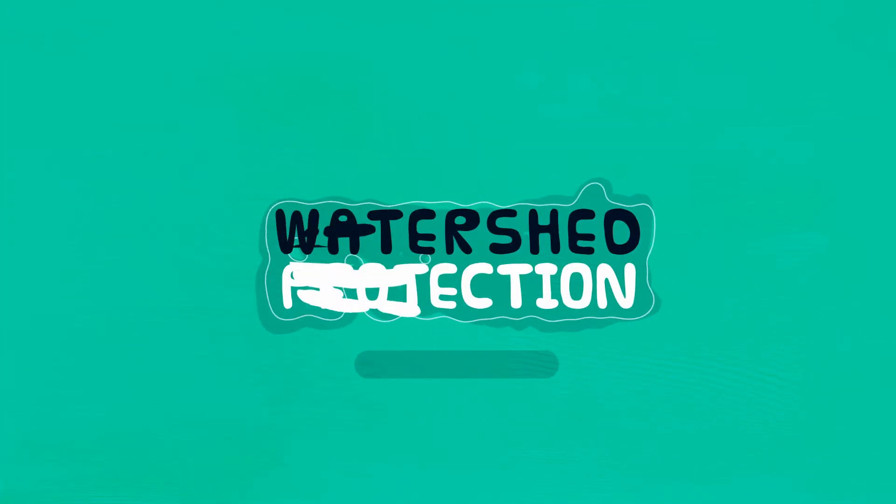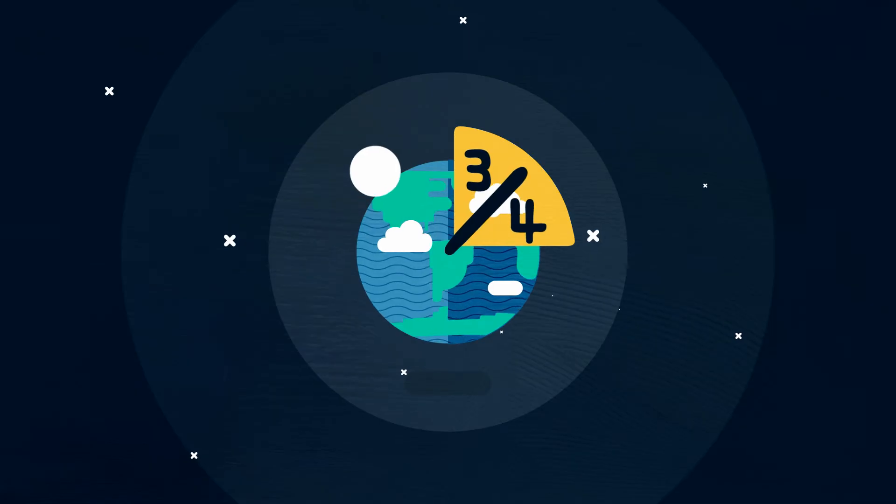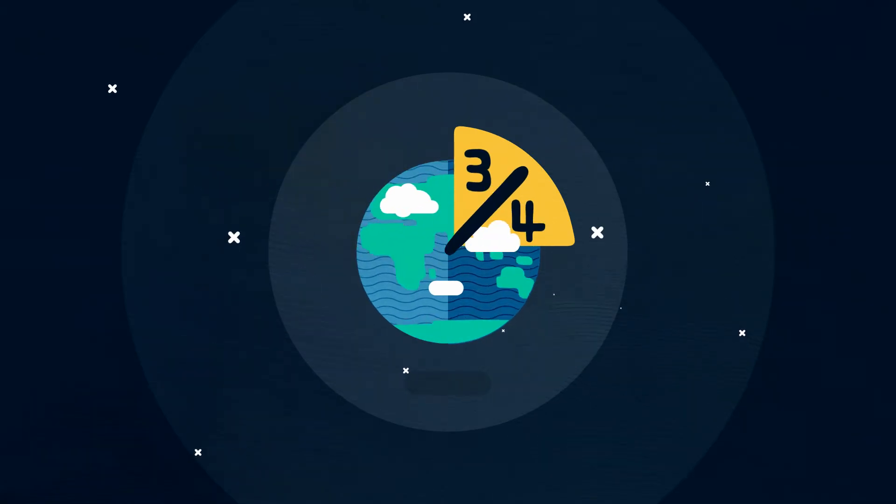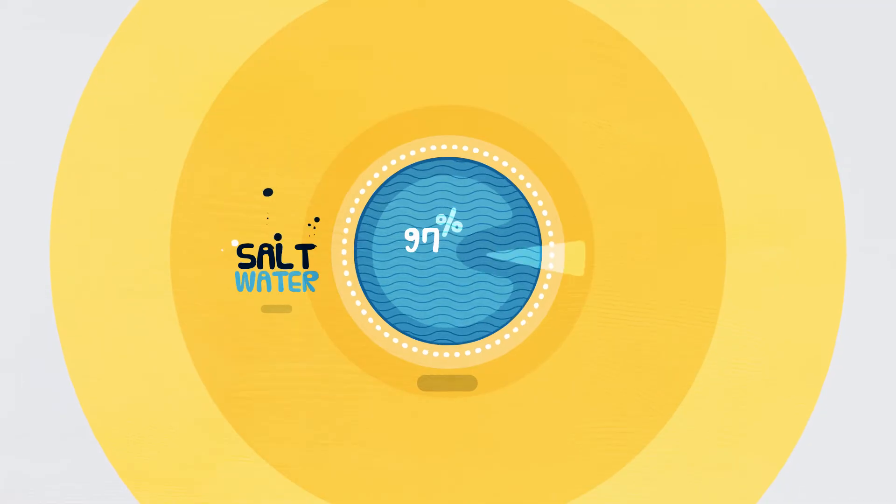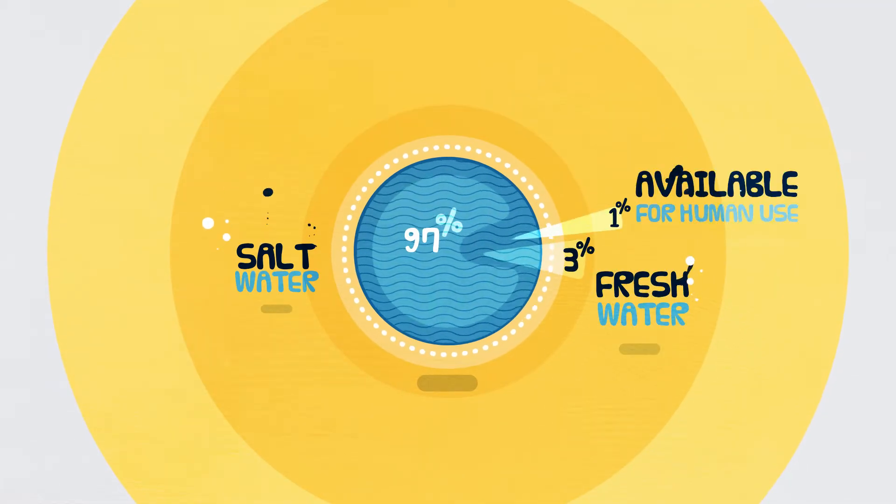Watershed Protection. Three quarters of our planet's surface is covered by water. 97% is saltwater, 3% is freshwater, and only about 1% is readily available for human use.